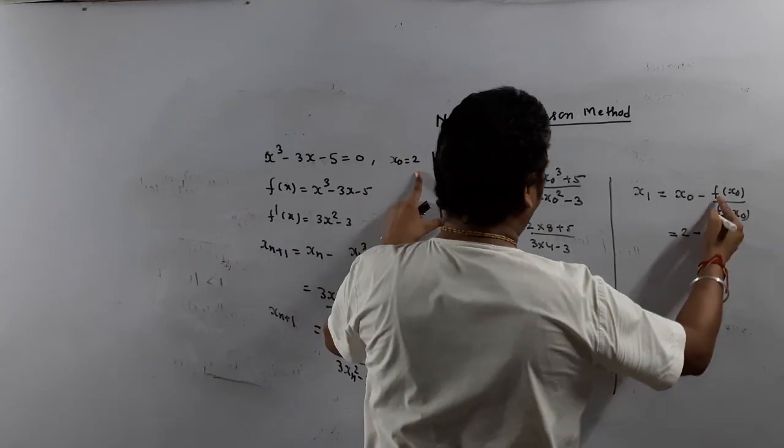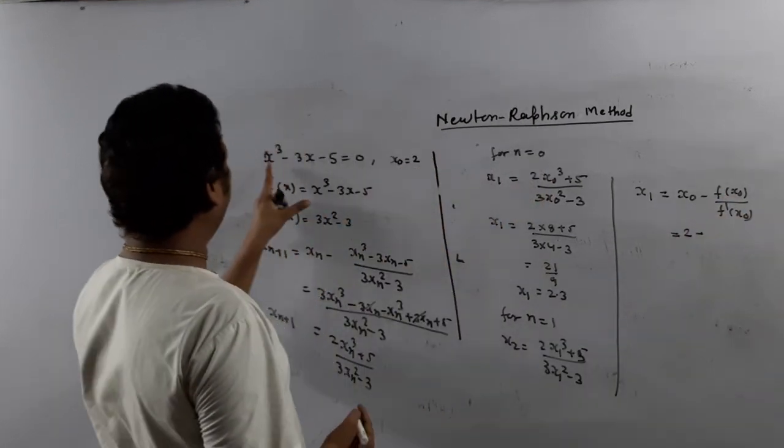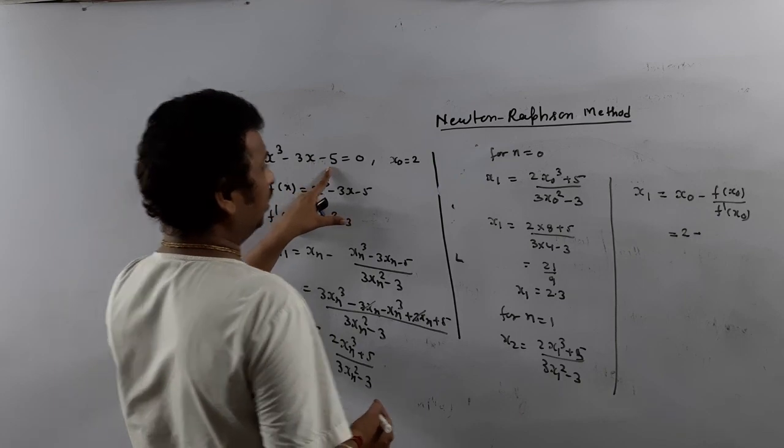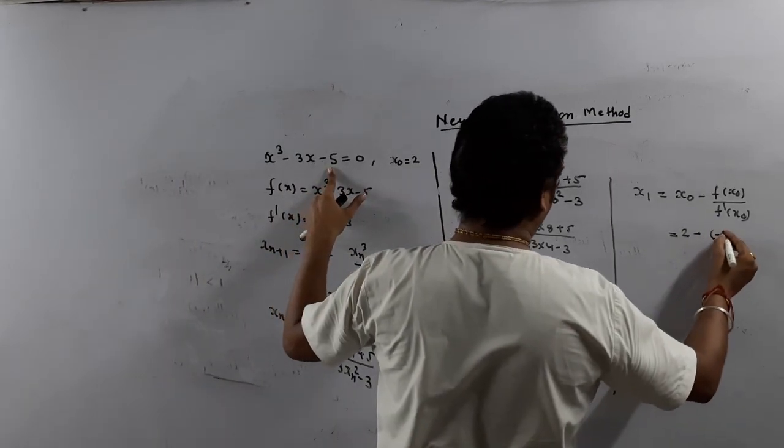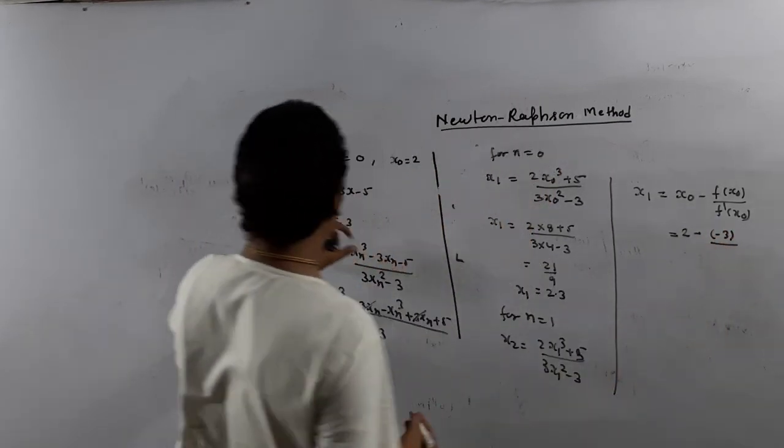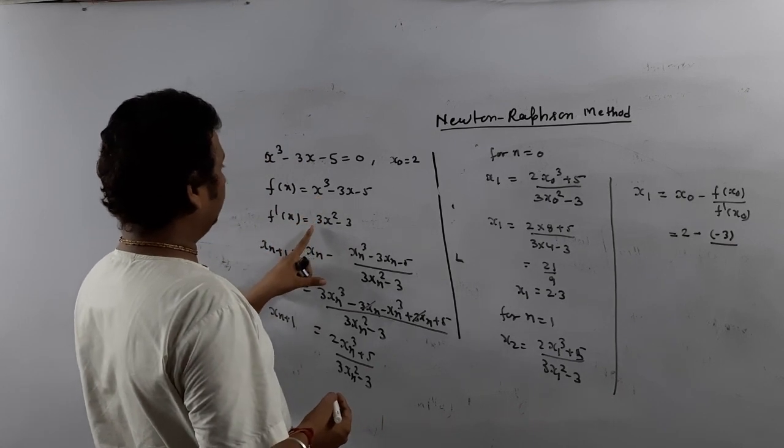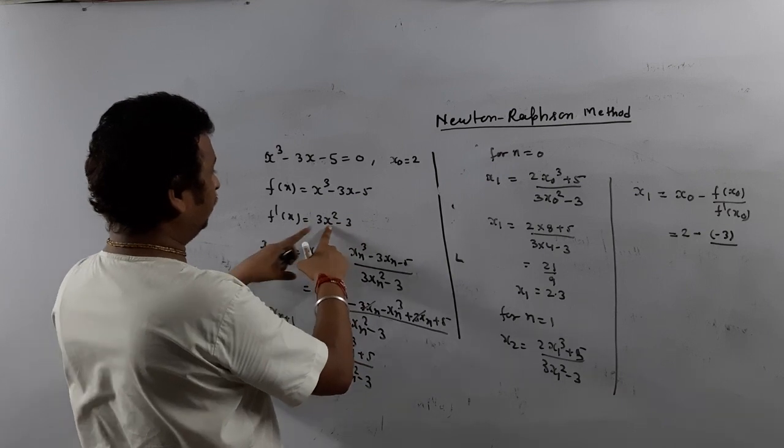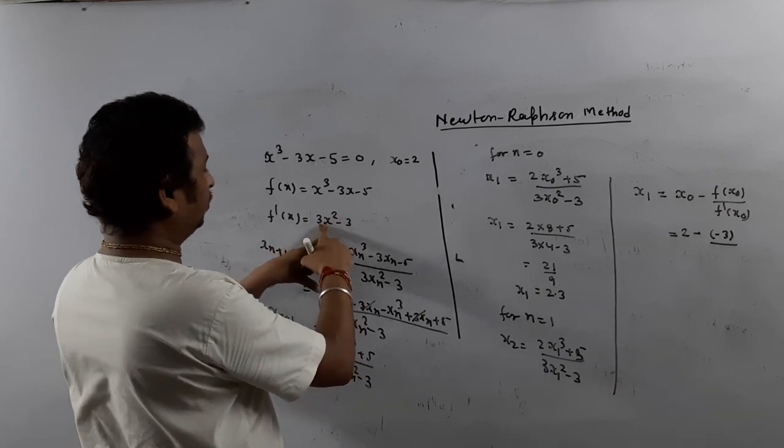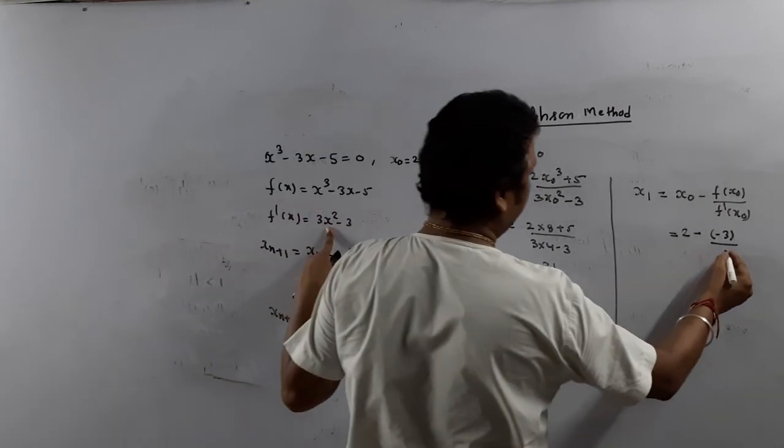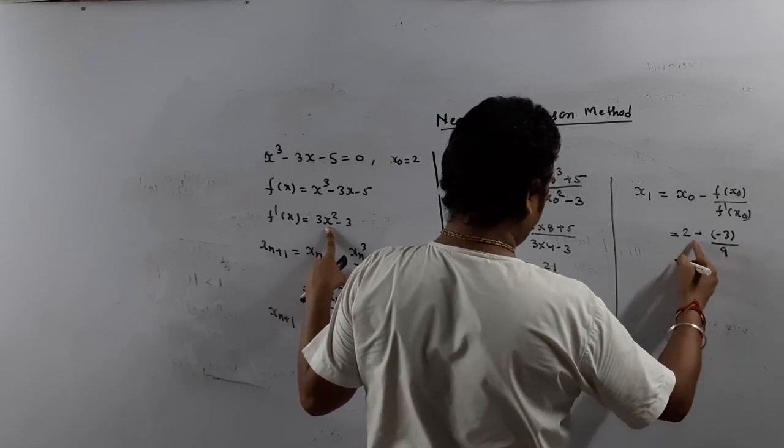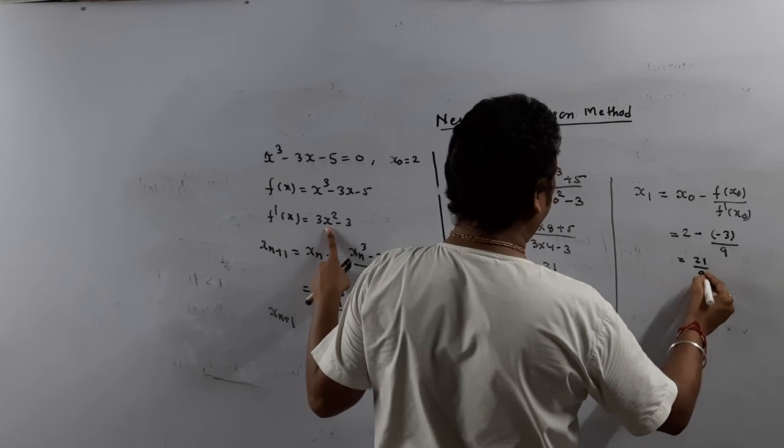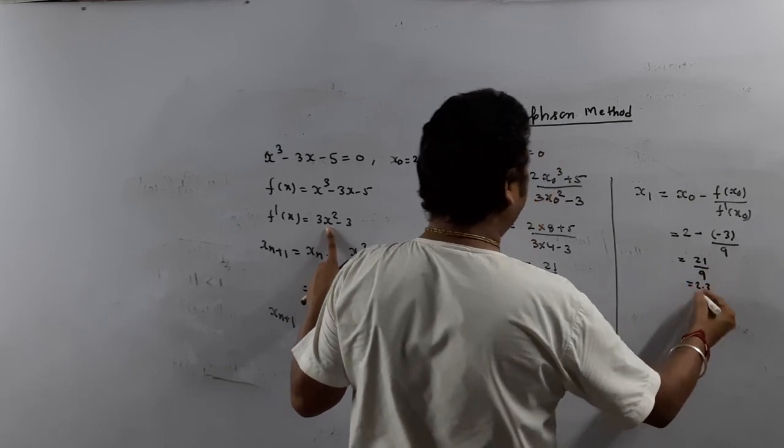So it is 2 minus f(x_0), which is 2³ that's 8 minus 6 minus 5, so minus 3, upon f'(x_0) which is 3 times 2² that's 12 minus 3 equals 9. So x_1 is 21 by 9. So directly you can calculate.